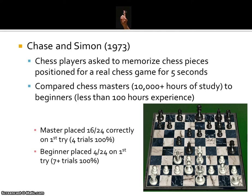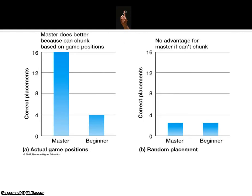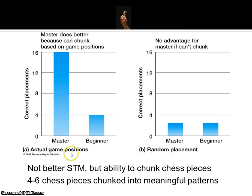You might think that chess masters simply have better memory, but what is more likely is that they were able to utilize chunking to help them memorize the pieces. Because of their familiarity with the game, they were able to chunk sets of four to six pieces into a memorable gameplay pattern. When chess masters were given randomly placed pieces to remember, their advantage went away — the master scored about the same as beginner chess players on random arrangements. So it's not that chess masters have better short-term memory; it's that they have the ability to chunk chess pieces into smaller, meaningful patterns of play, which allows them to remember more information.